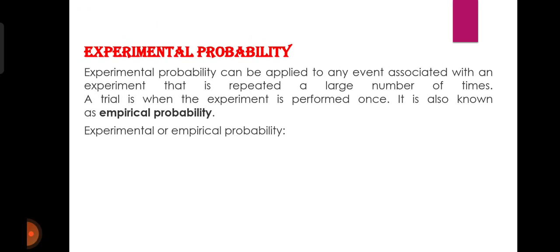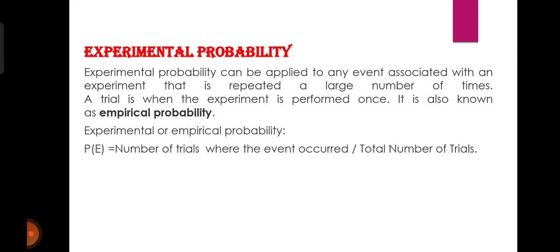अब इसका formula क्या होता है — experimental or empirical probability का formula है: P(E) is equal to number of trials where the event occurred divided by total number of trials. यानि कि आपके द्वारा कितने number of trials किये गए, उनको count करेंगे, और फिर उन trials को देखेंगे जिसमें वो particular event occurred। Number of trials where the event occurred को divide कर देंगे total number of trials से। इस तरह से हमें experimental या empirical probability मिल जाती है।